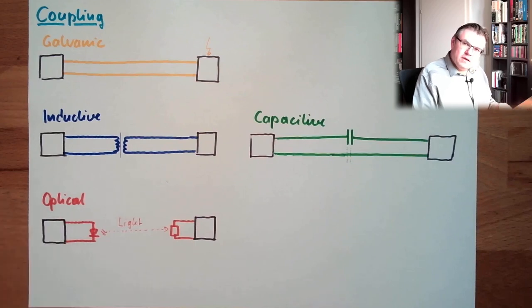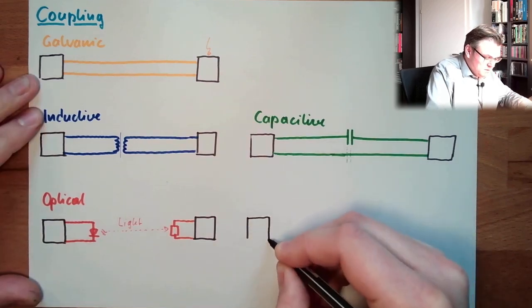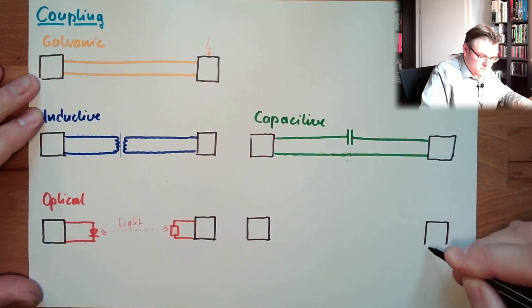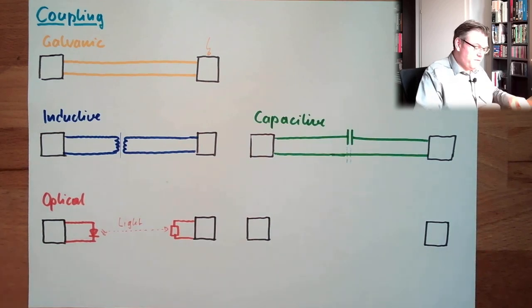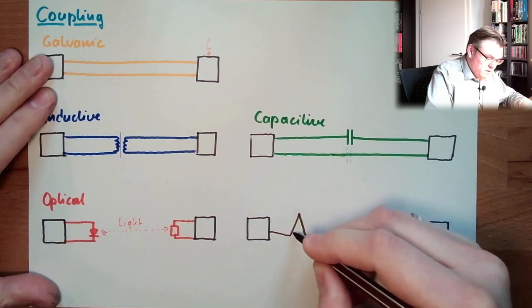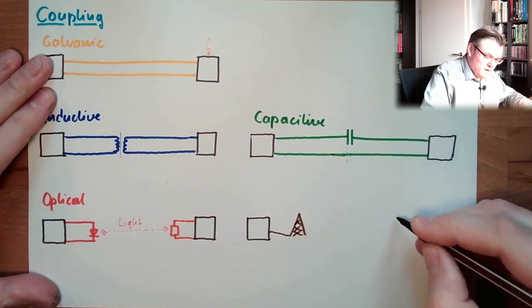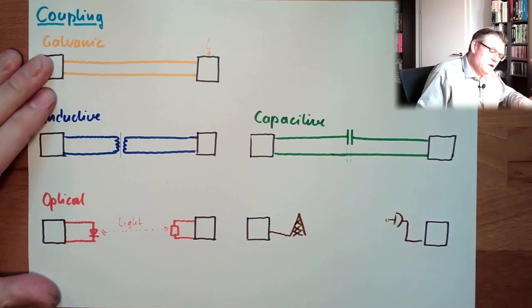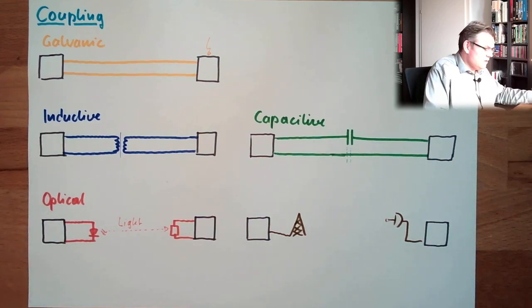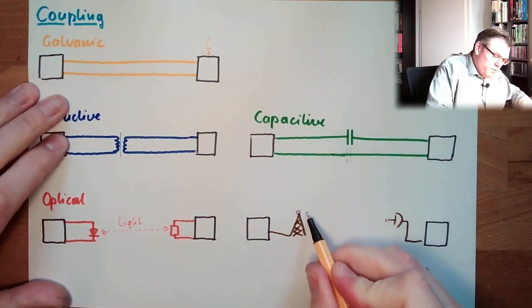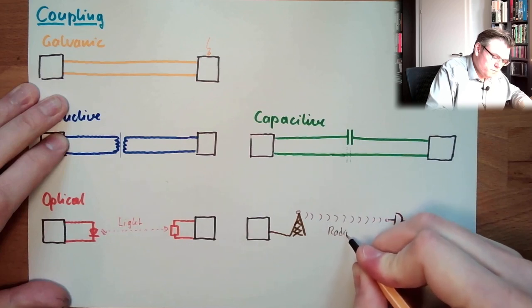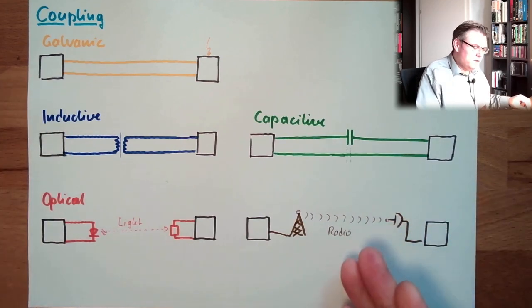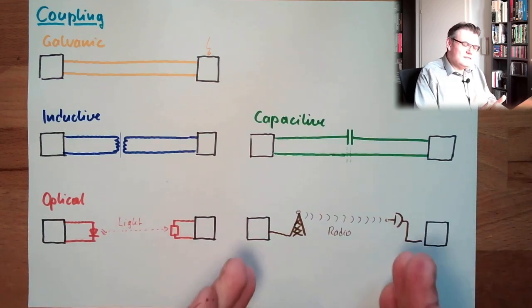Very similar to this optical approach is the last approach I want to mention. We have again here two communication partners. And this here is really used if we are transferring information very far. So here we have the information, and then we have here an antenna. We have the information, and here we are transferring this information not via light, but via radio.